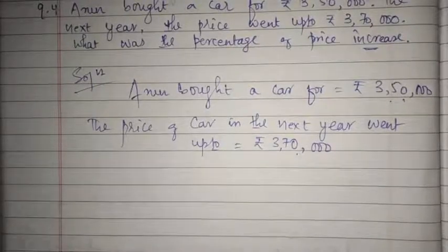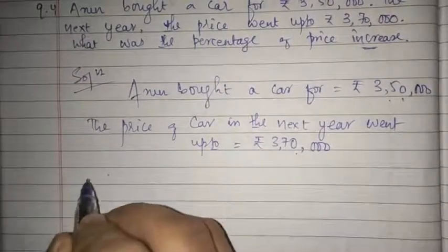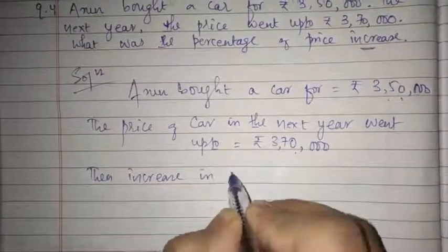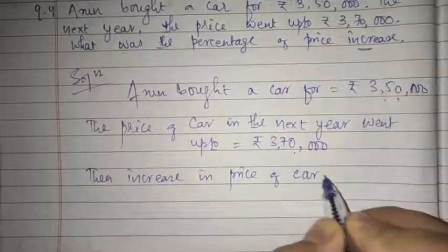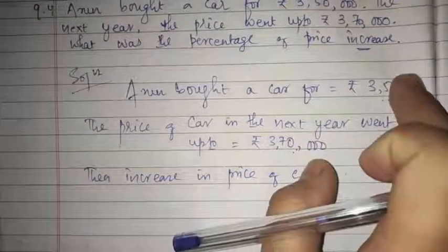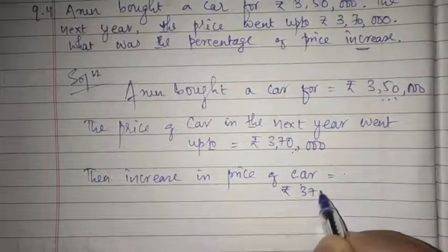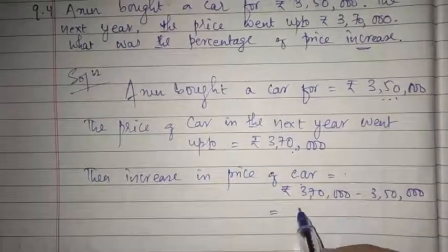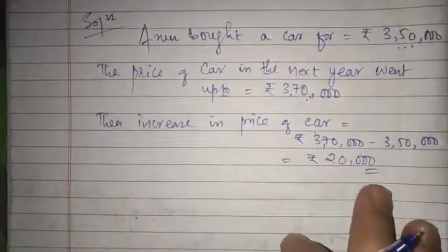Now we have to find the increase in price. Similar to what we did for population decrease, here we find the price increase. The increase in price of the car is equal to the higher value minus the lower value, that is 3 lakh 70,000 minus 3 lakh 50,000, which equals rupees 20,000.